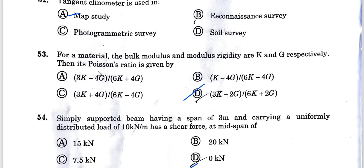Question 53: For a material, the bulk modulus and modulus of rigidity are K and G respectively. Then the Poisson's ratio, bulk modulus, and modulus of rigidity relationship formula is 3K minus 2G divided by 6K plus 2G. Option D is the correct answer.